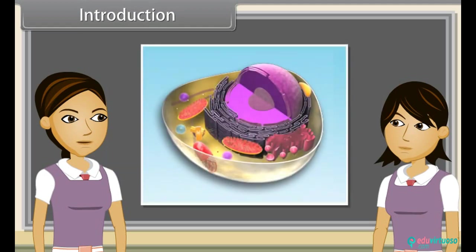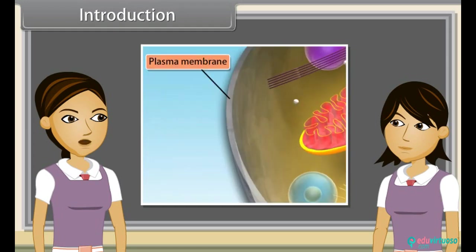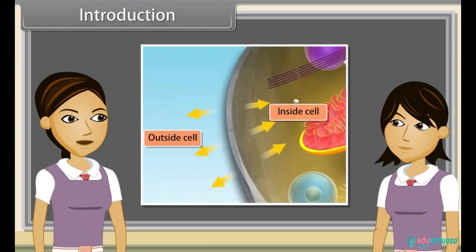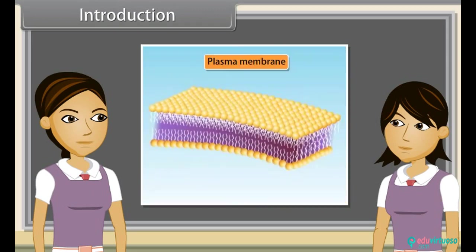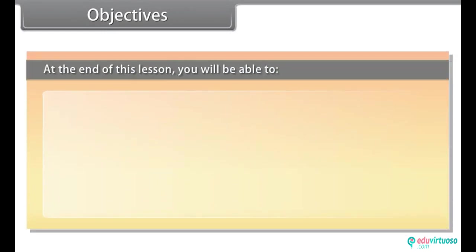Now we will discuss structure of eukaryotic cells and also observe the structure and functions of cell membrane and cell wall. Objectives: At the end of this lesson,